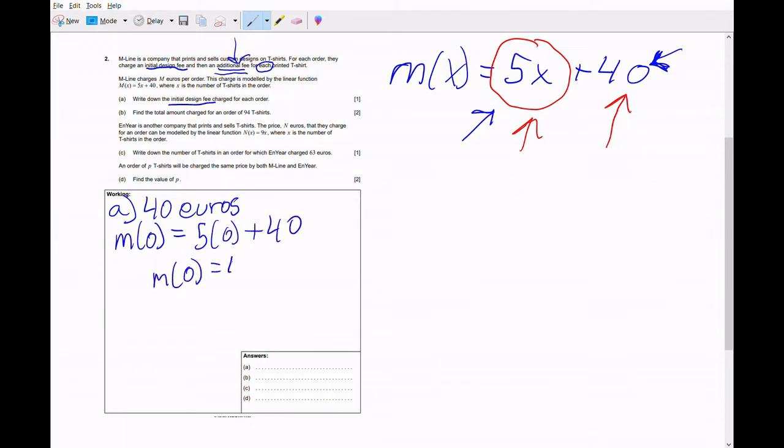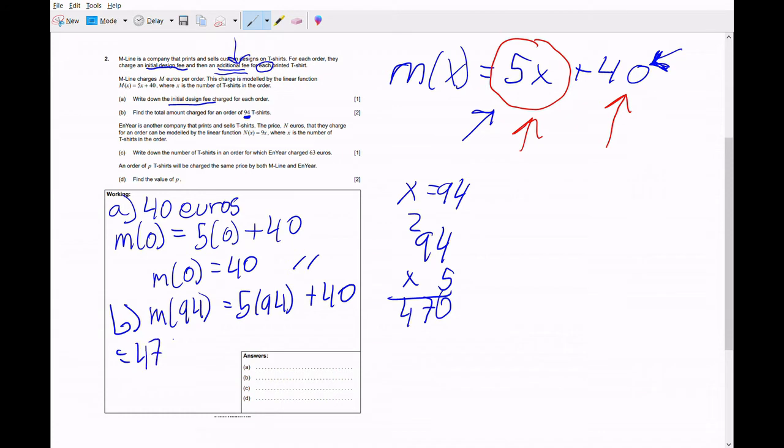For part B, they tell us to find the total amount charged for an order of 94 t-shirts. This means that x is going to be 94. So if we plug in 94 in the function, we're going to have 5 times 94 plus 40. We end up with 470 plus 40, and in the end, 510 euros. It's very important that in the answer you put the units, which in this scenario is euros. That's part of the marking.